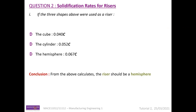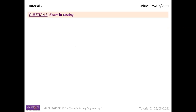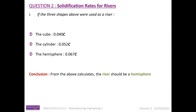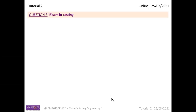To summarize Question Two: the cube riser solidifies at 0.040C, the cylinder at 0.052C, and the hemisphere at 0.067C. The conclusion is that the hemisphere solidifies last and should therefore be recommended as a riser. The key difference between Questions One and Two is that in Question One we wanted to know which shape solidifies first (the cube), while in Question Two we need to know which solidifies last (the hemisphere).